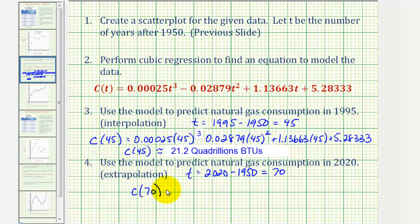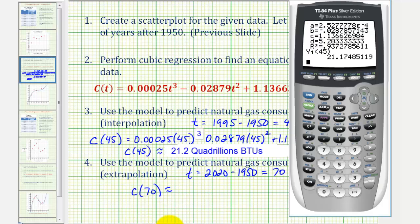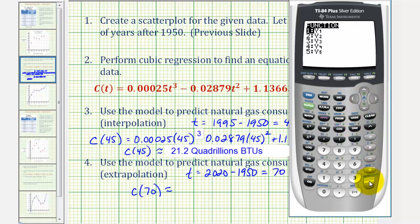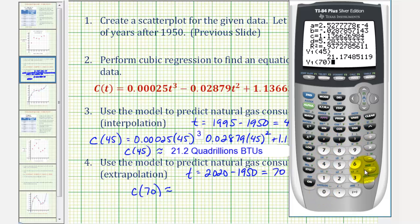Instead of writing all this out again, let's go ahead and just use the graphing calculator. So again, we'll select vars, right arrow, enter, enter, and then in parentheses, 70. So the prediction using our model for the consumption in 2020 would be 30.5 quadrillion BTUs.